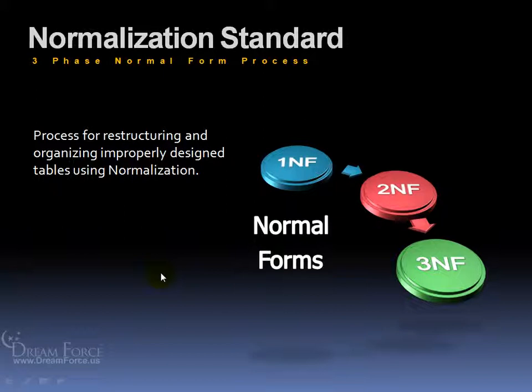In my Access Level 1 and Level 2 training videos, we already went over how to properly construct and design a database. However, if you get a new job at a company where the original architect of the database did a poor job designing it, well here we have what's called the Normalization Standard. It's breaking down a table of data into its smallest, most meaningful parts or fields. The process to help you restructure correctly a poorly designed database is a three-phase process.